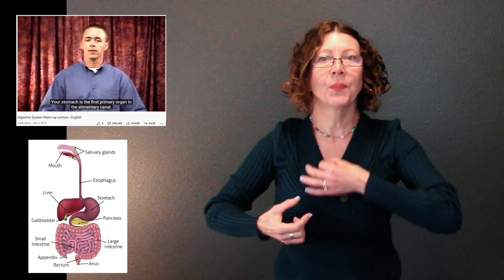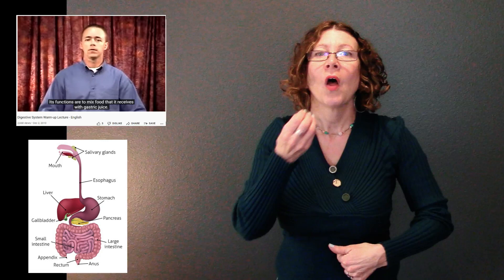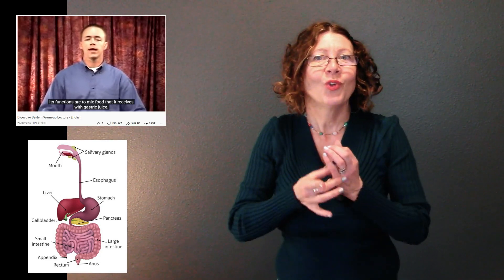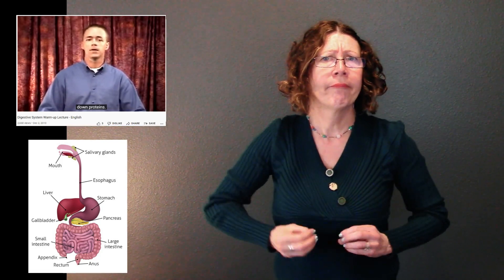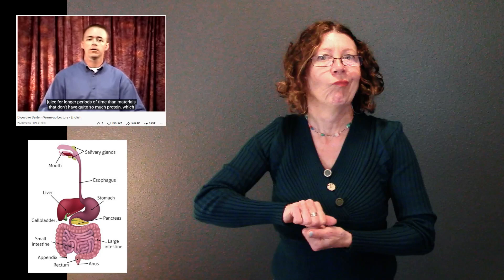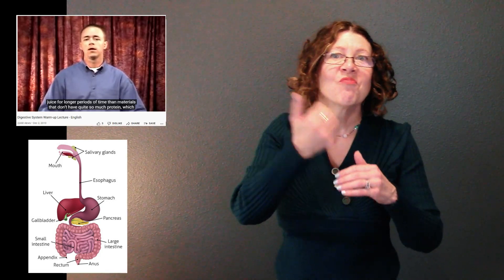Your stomach is the first primary organ in the alimentary canal. Its functions are to mix food that it receives with gastric juice. Gastric juice is a fairly nasty cocktail of chemicals that's designed primarily to break down proteins. Foods that are higher in protein concentration will remain in your stomach exposed to gastric juice for longer periods of time. Materials that don't have quite so much protein pass through to the small intestines more readily.